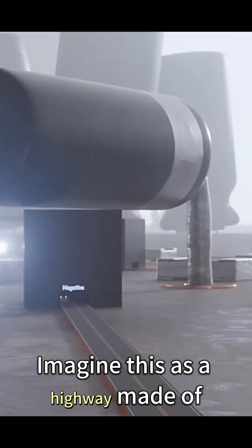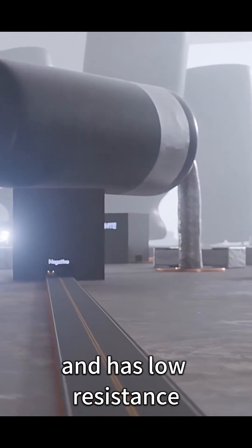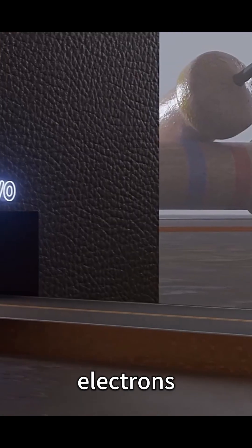Imagine this as a highway made of copper. It's cheap and has low resistance, so it becomes the highway for the flow of electrons.